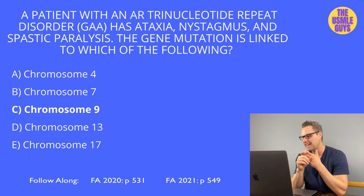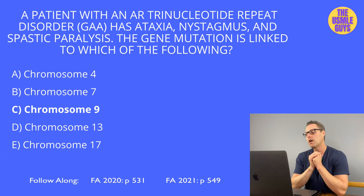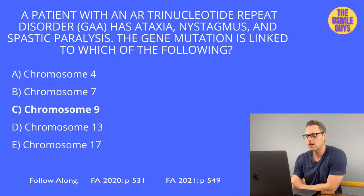Additional findings to watch for in Friedreich's ataxia include hypertrophic cardiomyopathy — a common cause of death — as well as pes cavus, hammer toes, and diabetes. Also watch for a child with kyphoscoliosis, which is a common finding in children with Friedreich's ataxia.